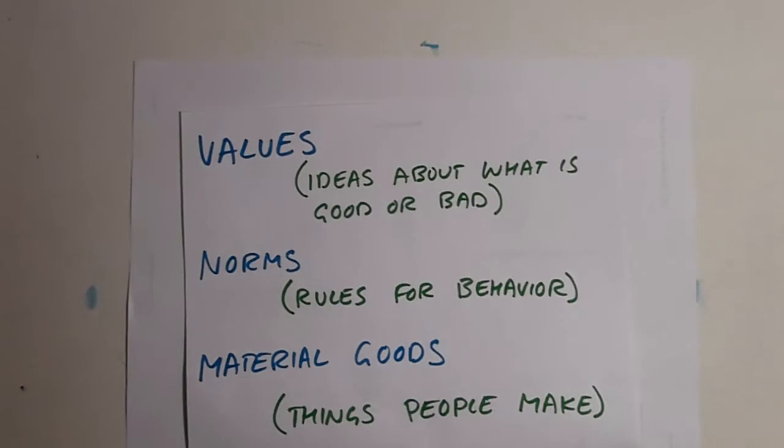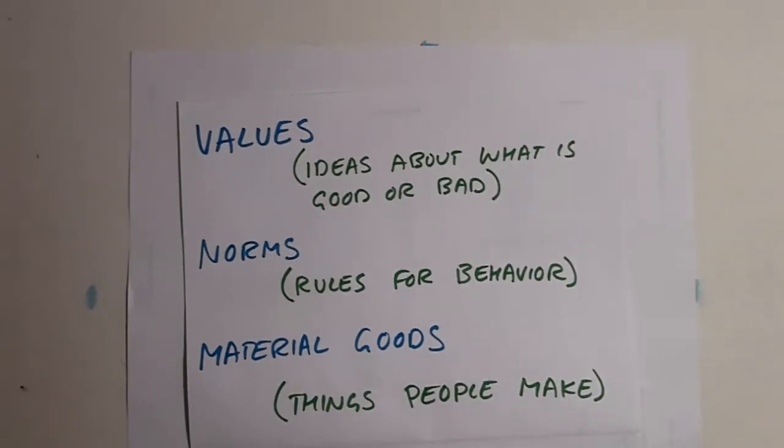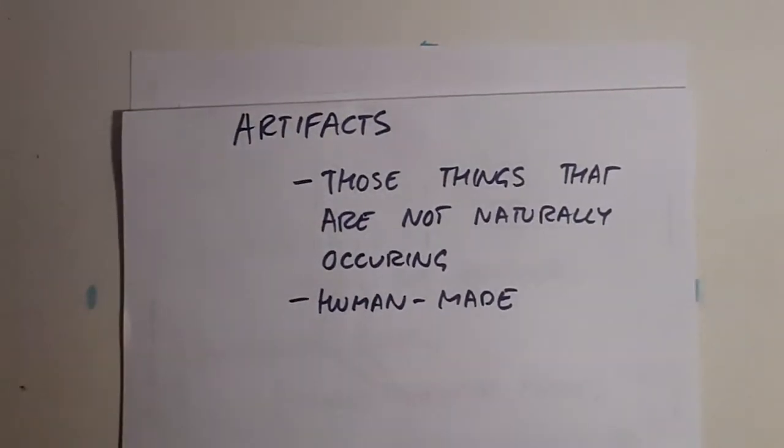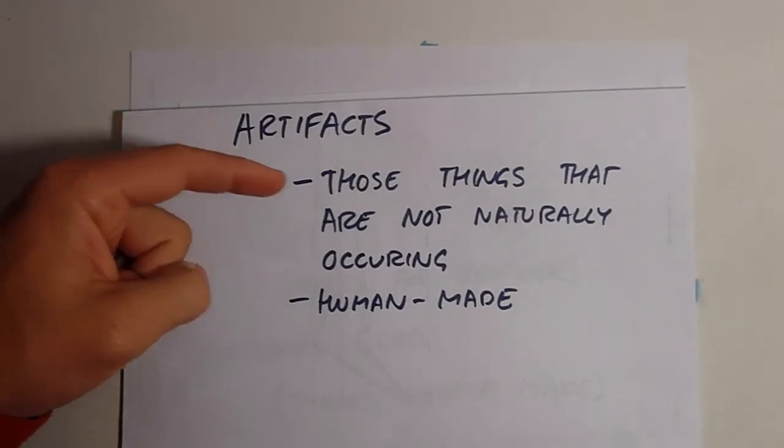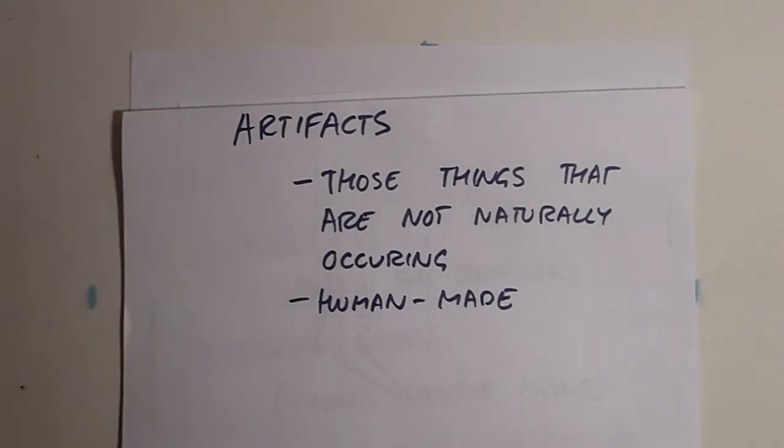Now this last aspect of culture is essential to sociological understanding of culture. A word that can help us highlight this meaning is artifact. An artifact is anything that is not naturally occurring. It is something that is human-made.